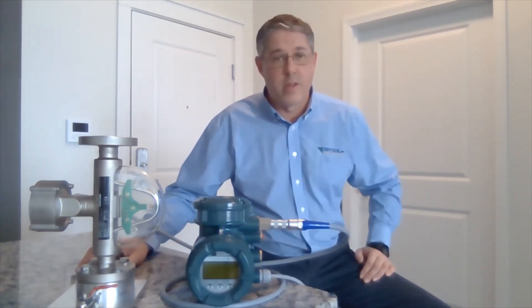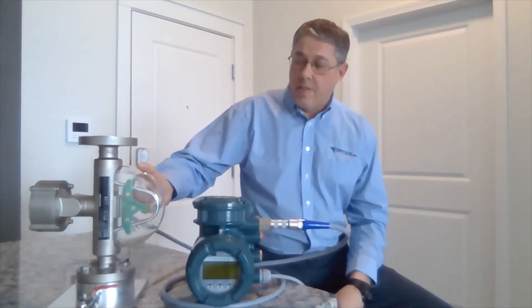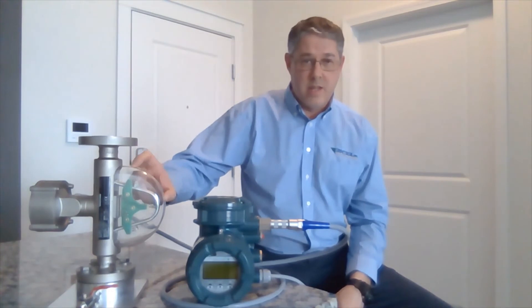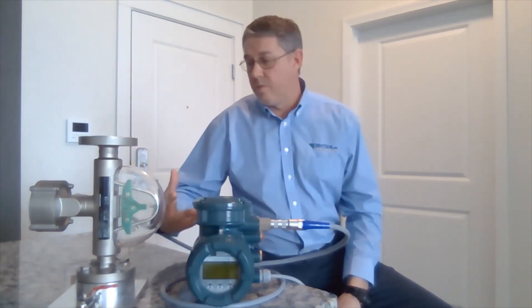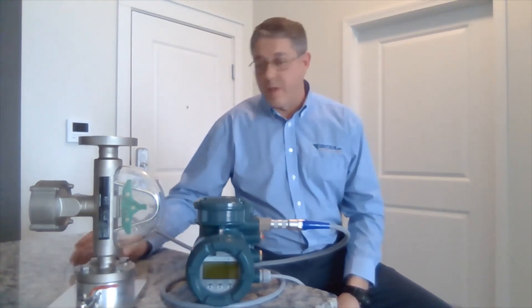The Rotomass line has the thickest tube designs in the industry, so this means it's going to provide a longer lifespan, especially in corrosive or abrasive applications. You can imagine, the thicker tube, it takes less to affect the tube walls.